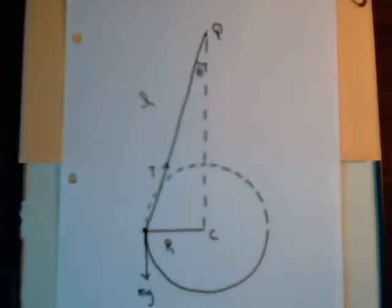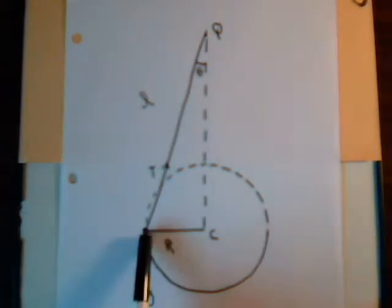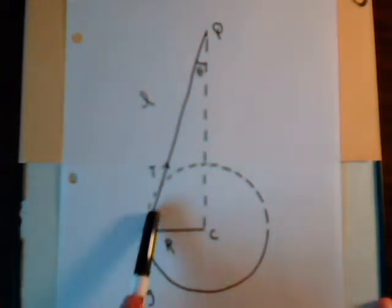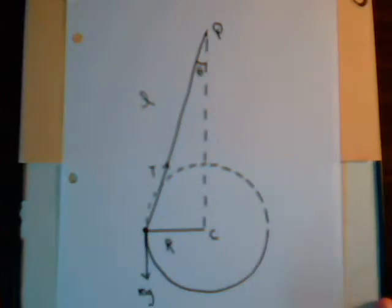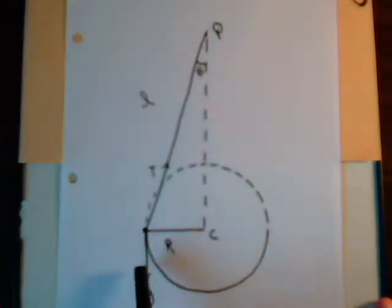Before we consider the angular momentum of the system, let's first consider the forces that are acting. Gravity pulls straight down, and then there's a tension in the string. Let's look at these forces in more detail, and then we'll consider what the angular momentum is.